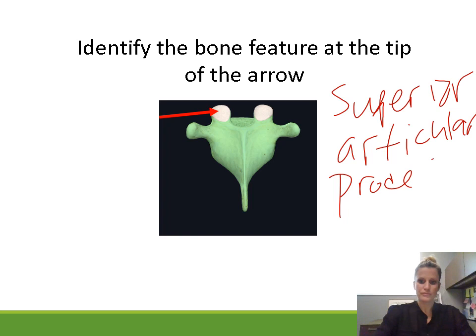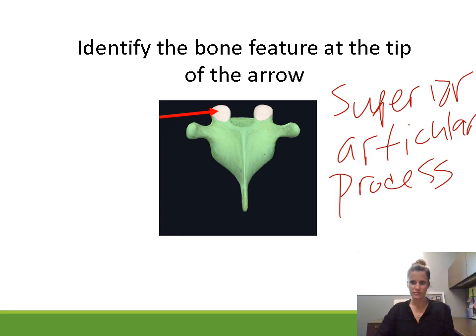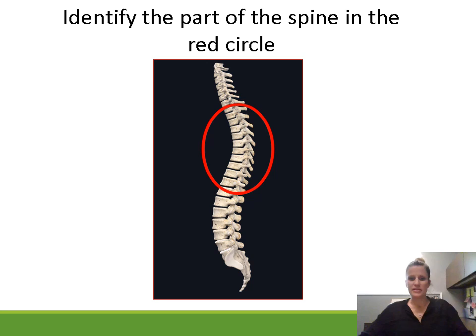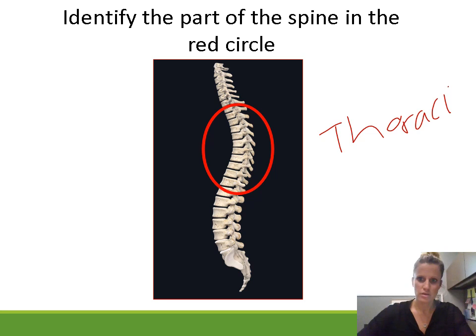Identify this part of the spine. This is the middle region — the thoracic region. Above that would be cervical.